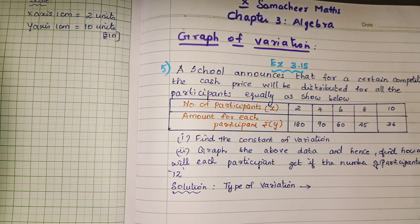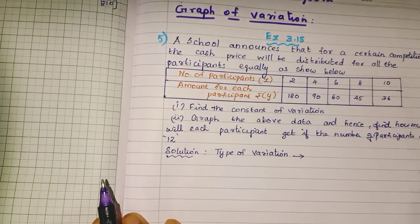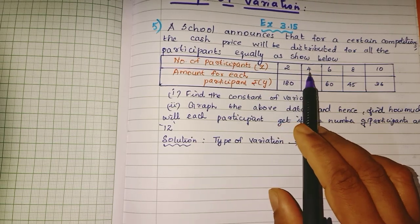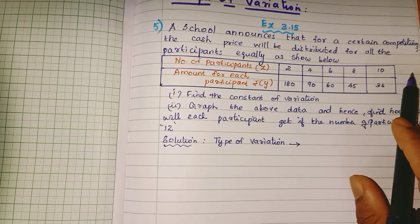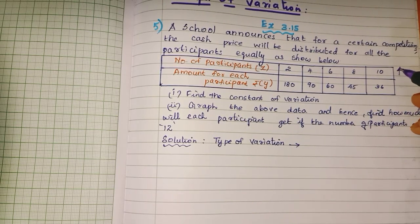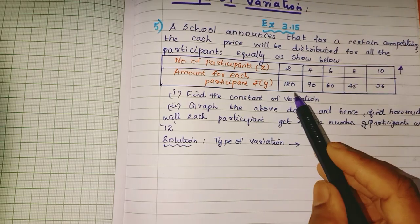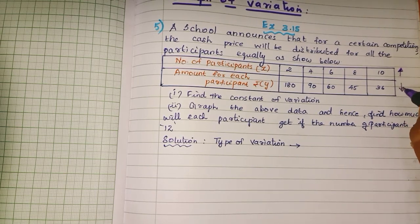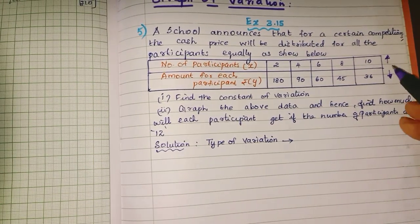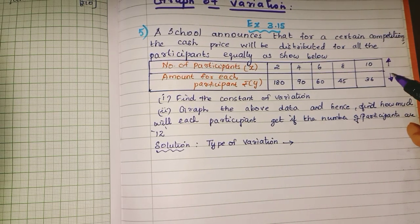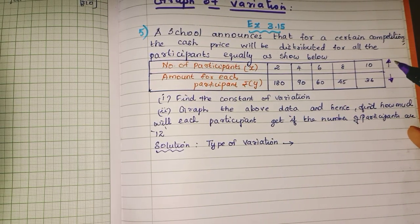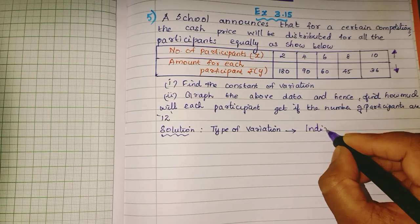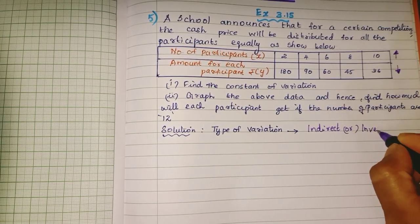First, we have to find out what type of variation it is. If you look at the X values, they increase: 2, 4, 6, 8, 10 — increased mode. If one quantity increases, the other quantity decreases. So the type of variation is indirect or inverse variation.